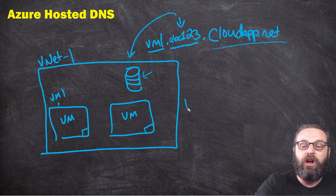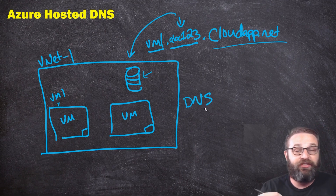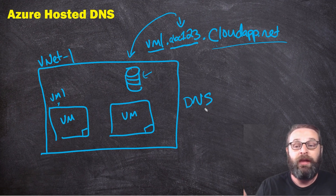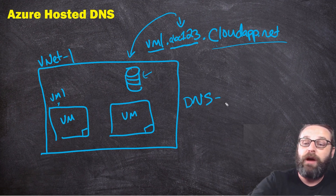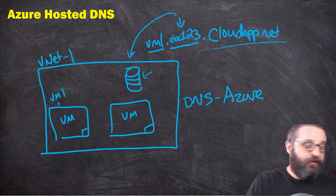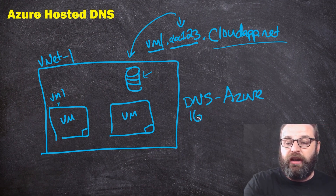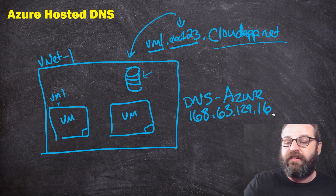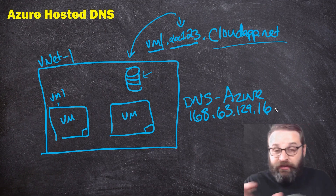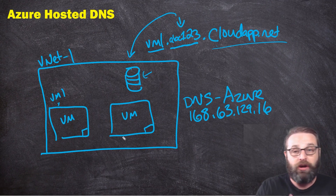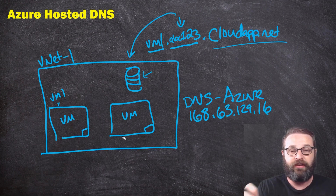There are a few levels of configurations and settings. First, the VNet itself has its own DNS configuration. You can identify the DNS servers if you want to, or by default it points to Azure DNS servers. Specifically, the Azure DNS server is 168.63.129.16, and this is what is used to resolve all of the name resolution that takes place.